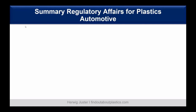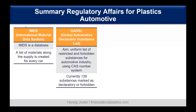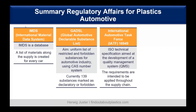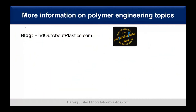Now let's conclude with a summary of regulatory affairs for plastics in automotive. We discussed the IMDS — the International Material Data System, a database listing all materials along the supply chain for every car. Then the GADSL — the Global Automotive Declarable Substance List — with the aim to make a uniform list of restricted and forbidden substances in the automotive industry, with currently 139 substances marked as declaratory or forbidden. Then the IATF 16949 — a quality management system based on ISO 9001, applying throughout the whole supply chain. And the ELV — End of Life Vehicles regulation — responsible for the reuse of old cars within the EU, relevant for all parts, semi-finished goods, and materials delivered into the automotive sector.